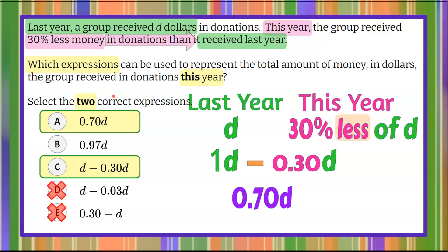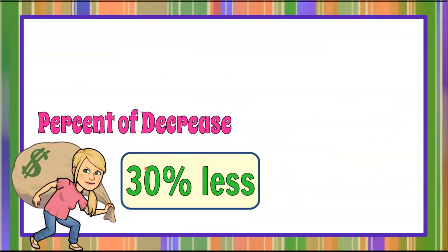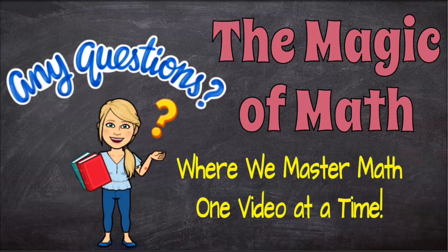So the two correct expressions representing 30% less of the amount from last year are A and C: 70% of the whole, or take the whole and subtract 30%. That is how you write percent of decrease — 30% less — algebraically. Thanks for joining me at The Magic of Math, where we continue to master math one video at a time. I hope you come back soon.